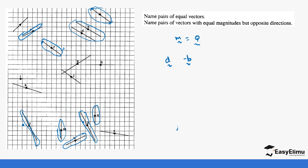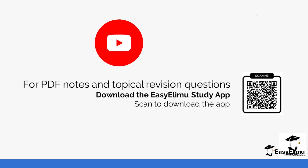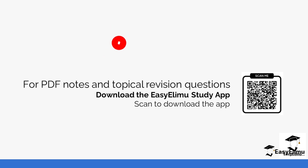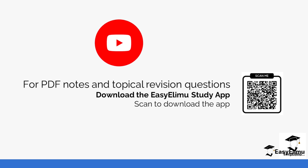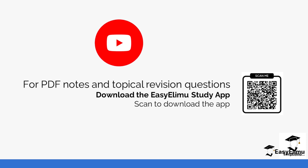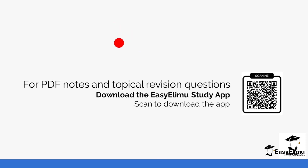Those are the examples of vectors with equal magnitude but opposite direction. You can get more questions on identifying equivalent vectors and vectors with the same magnitude but opposite direction in the app. See you in the next lesson.